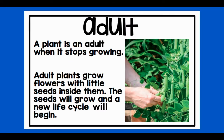Adult. A plant is an adult when it stops growing. Adult plants grow flowers with little seeds inside them. The seeds will grow and a new life cycle will begin.